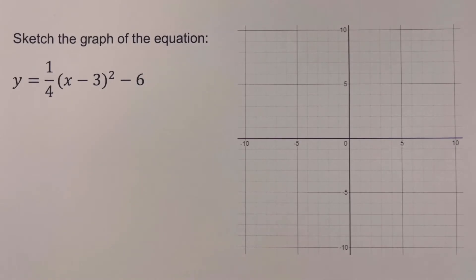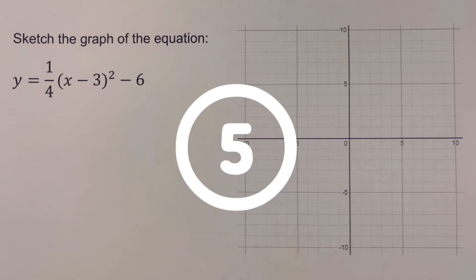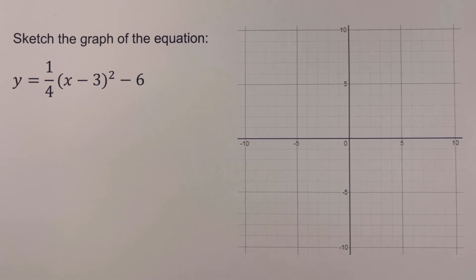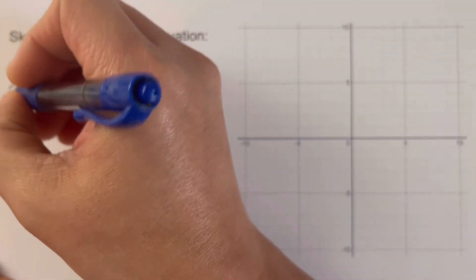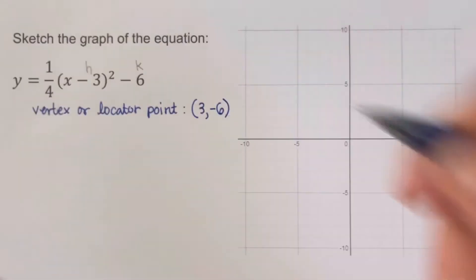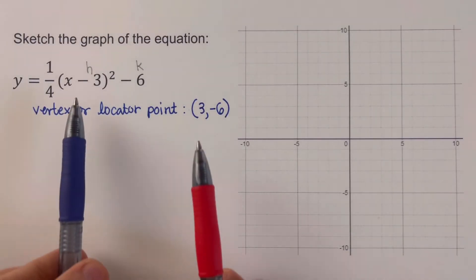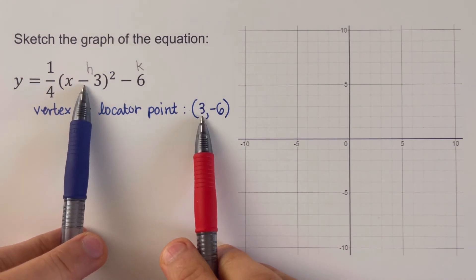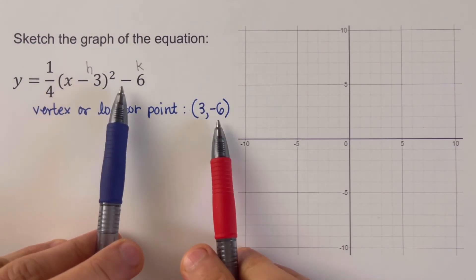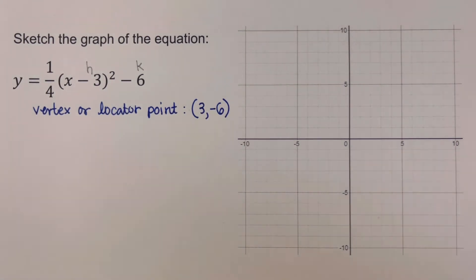I encourage you to pause this video and try this next problem on your own, then unpause to check your answer. Okay — going over the problem again. The first step is to determine the vertex or locator point. Our vertex is (3, −6): we switch the sign of the negative h to get positive 3, and keep the sign of k as negative 6.